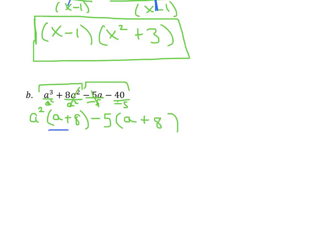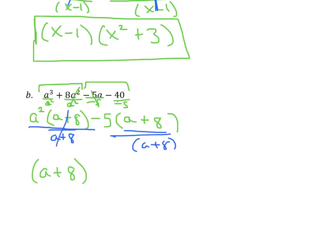Now I can see that both groups have an a plus 8. So we write a plus 8 out front and divide each term by a plus 8. These cancel out, and I can see that I have an a squared and a minus 5 left over inside the parentheses. So after factoring out a plus 8, I have a squared minus 5 remaining.